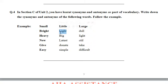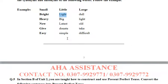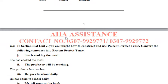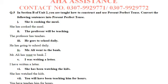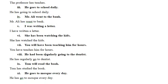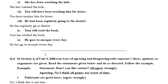In question number 5, you have to make present perfect tense sentences. For example: 'She is cooking the meal' becomes 'She has cooked the meal.' You have to change the given sentences into present perfect tense in this way.